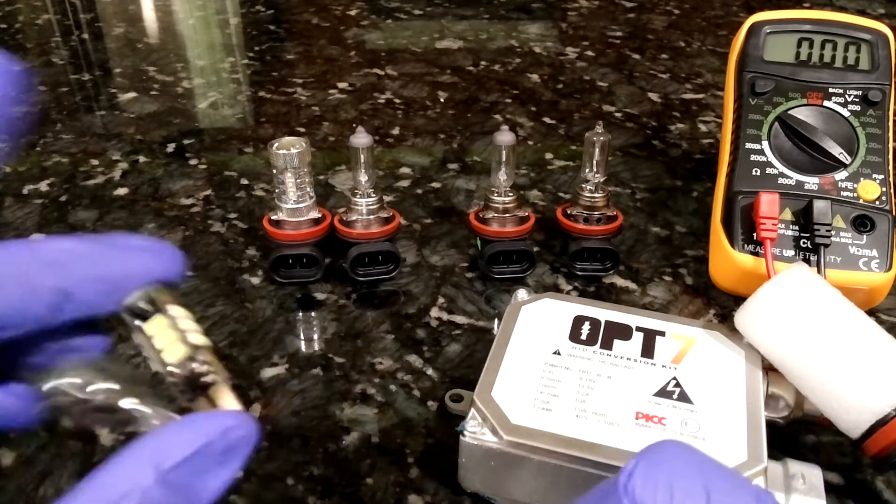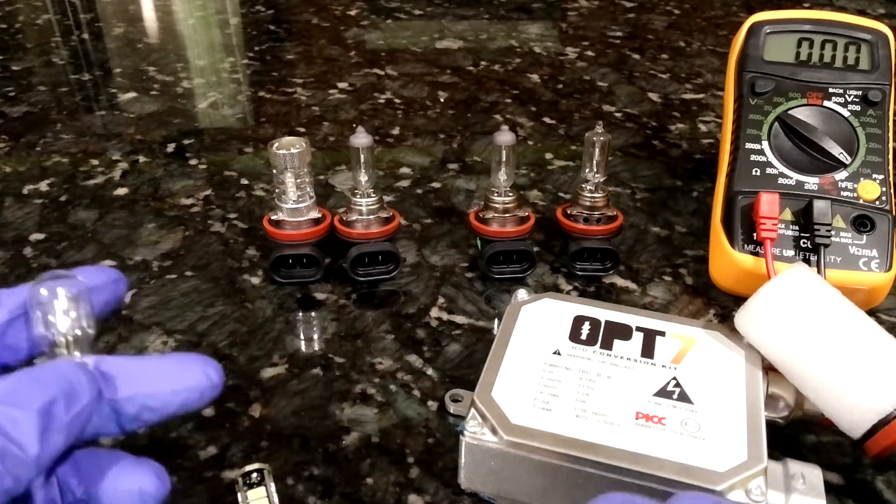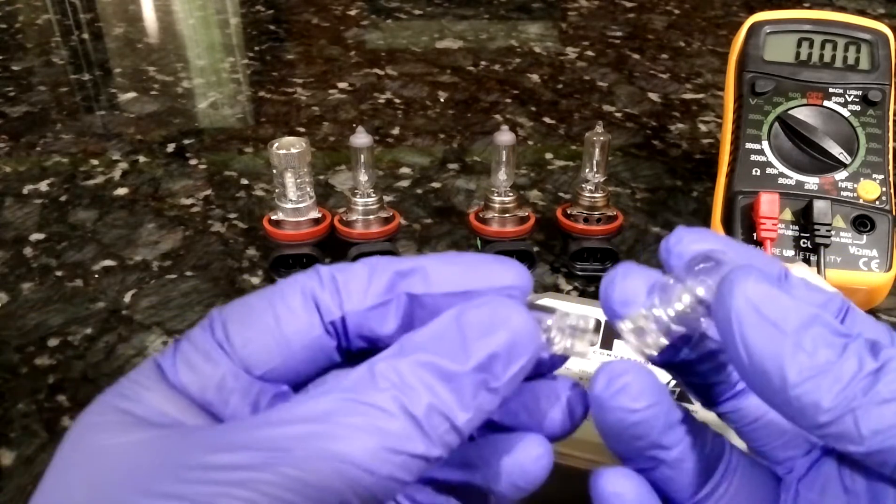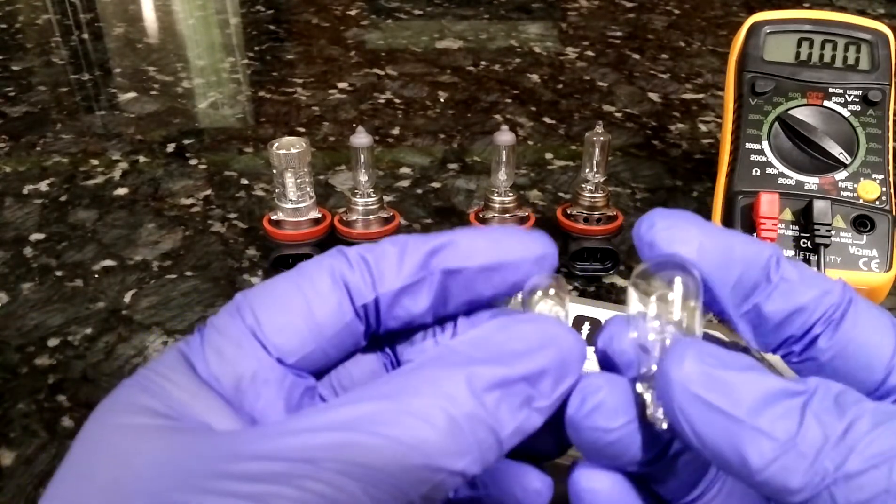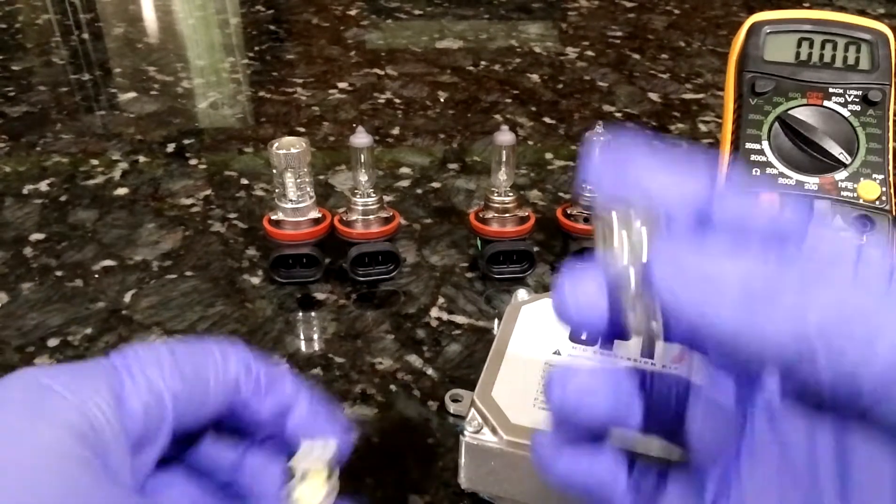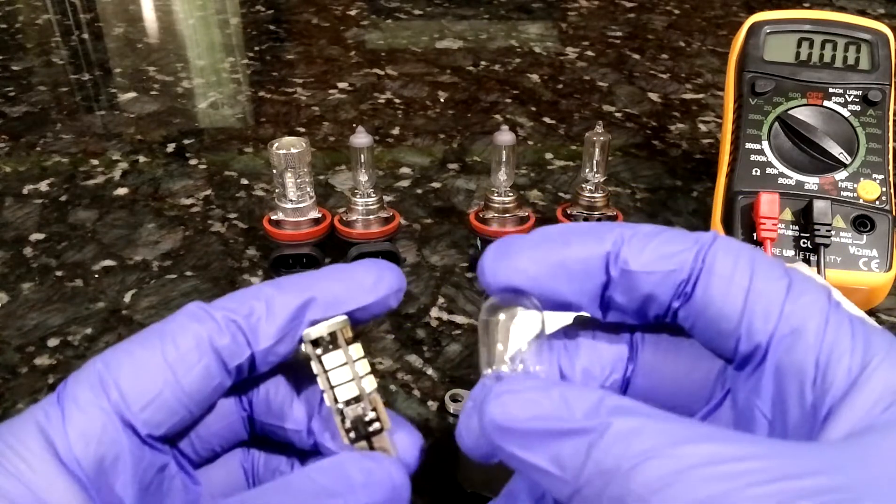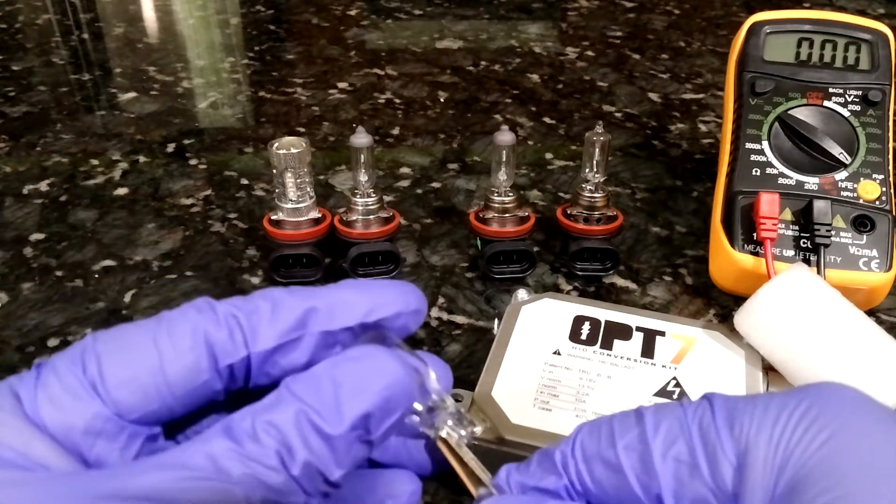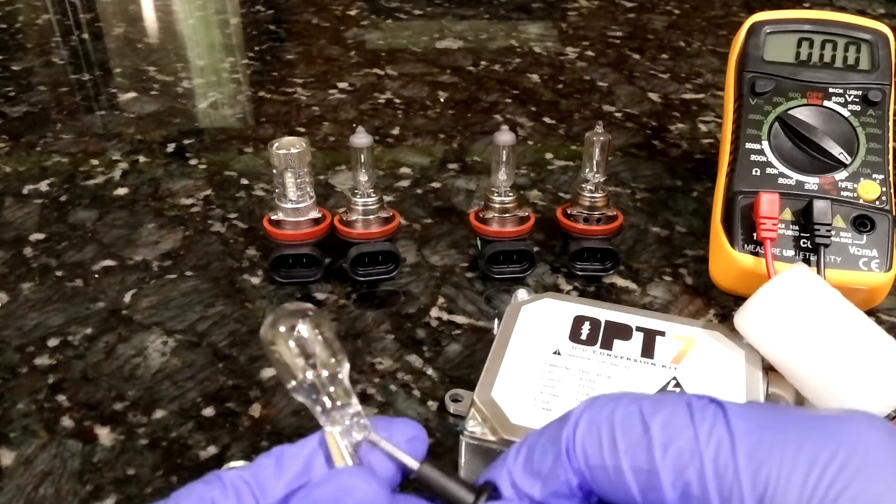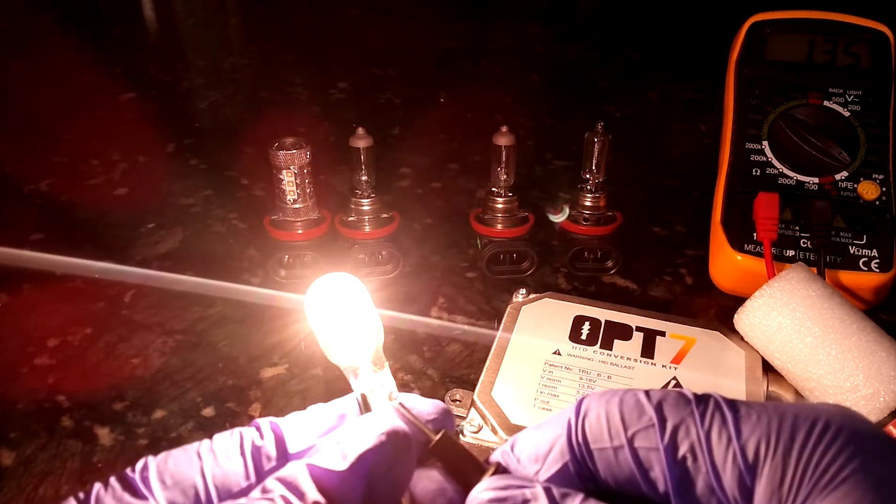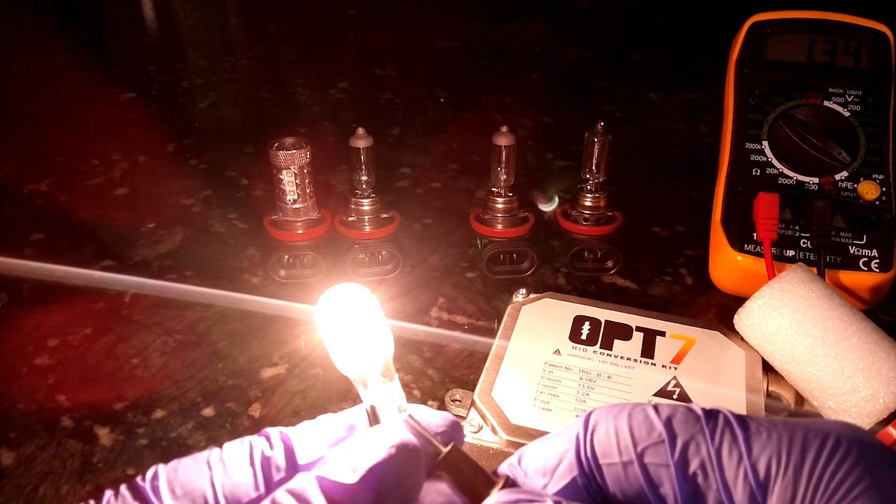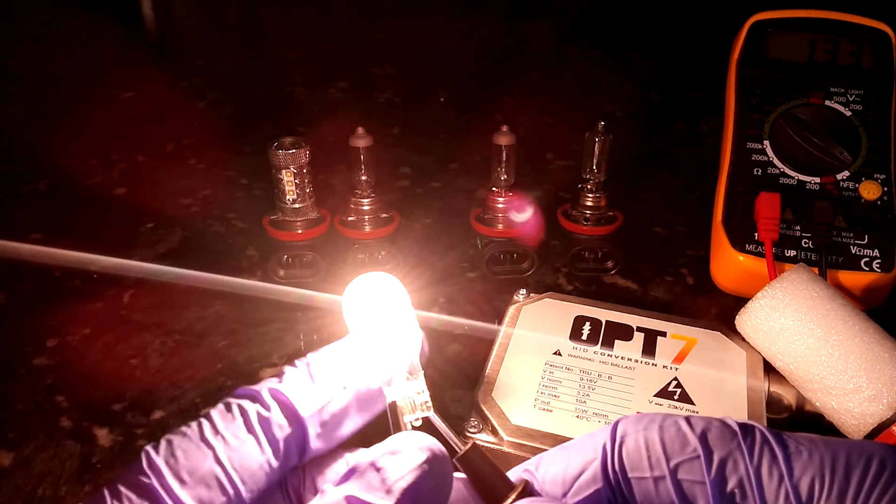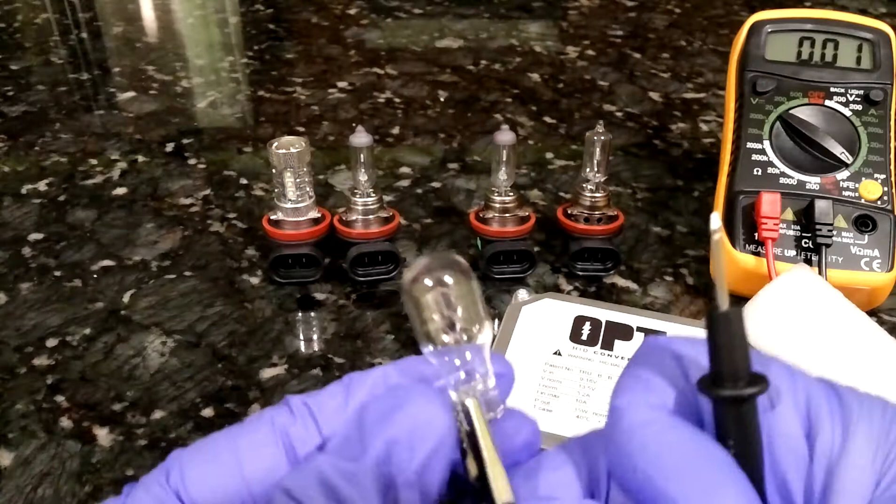The next one I have here is a size 921 bulb. These have the same base as the T10 but they're physically larger. In my particular vehicle these are the reverse lights and also the bed light for my truck. Let's first see what the incandescent bulb looks like. It's pretty bright. This is drawing 1.34 amps. I feel the heat already generating from the bulb, pretty hot. These get hot really fast.